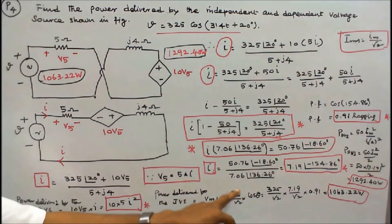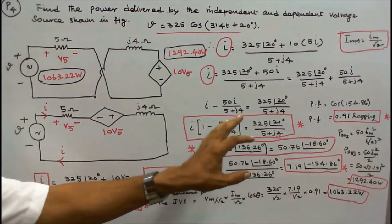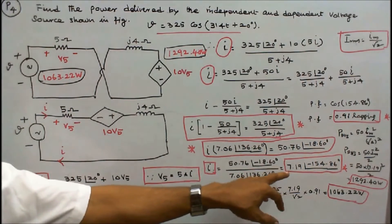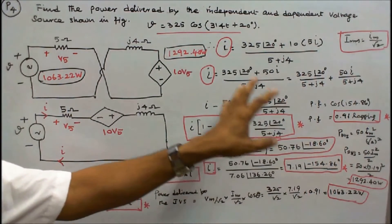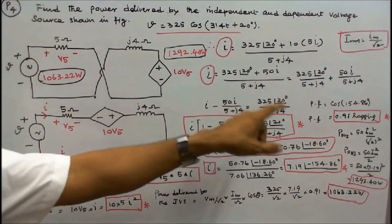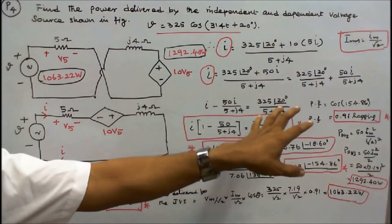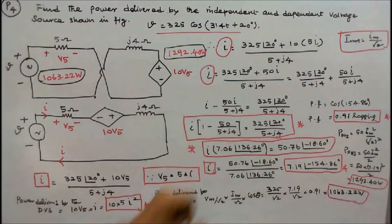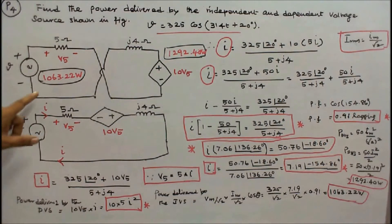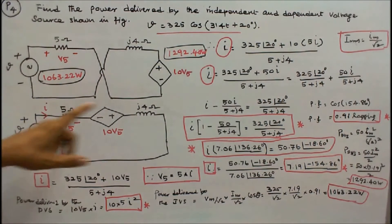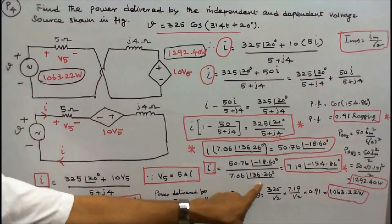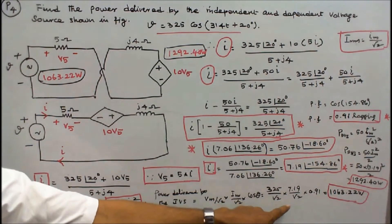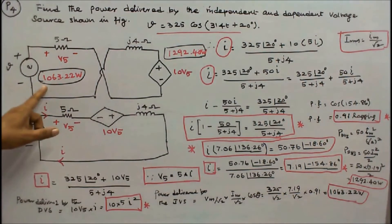Simplifying the equation gives I times 7.06 angle 136.26 degrees equals 50.76 angle minus 18.60 degrees. Therefore I equals 7.19 angle minus 154.86 degrees. The power factor angle is 154.86 degrees; cos(154.86) equals 0.91, and the current is lagging. Power delivered by the independent voltage source is (Vm divided by root 2) times (Im divided by root 2) times cos(theta), which equals (325 divided by root 2) times (7.19 divided by root 2) times 0.91, equal to 1063.22 watts.